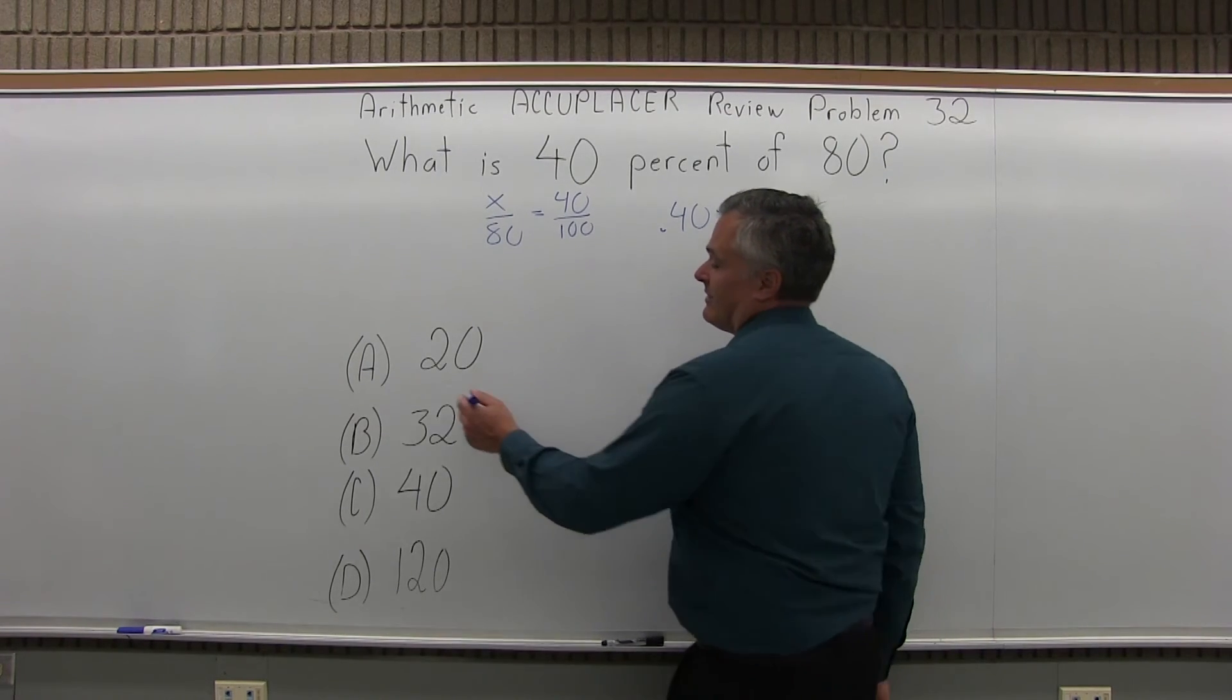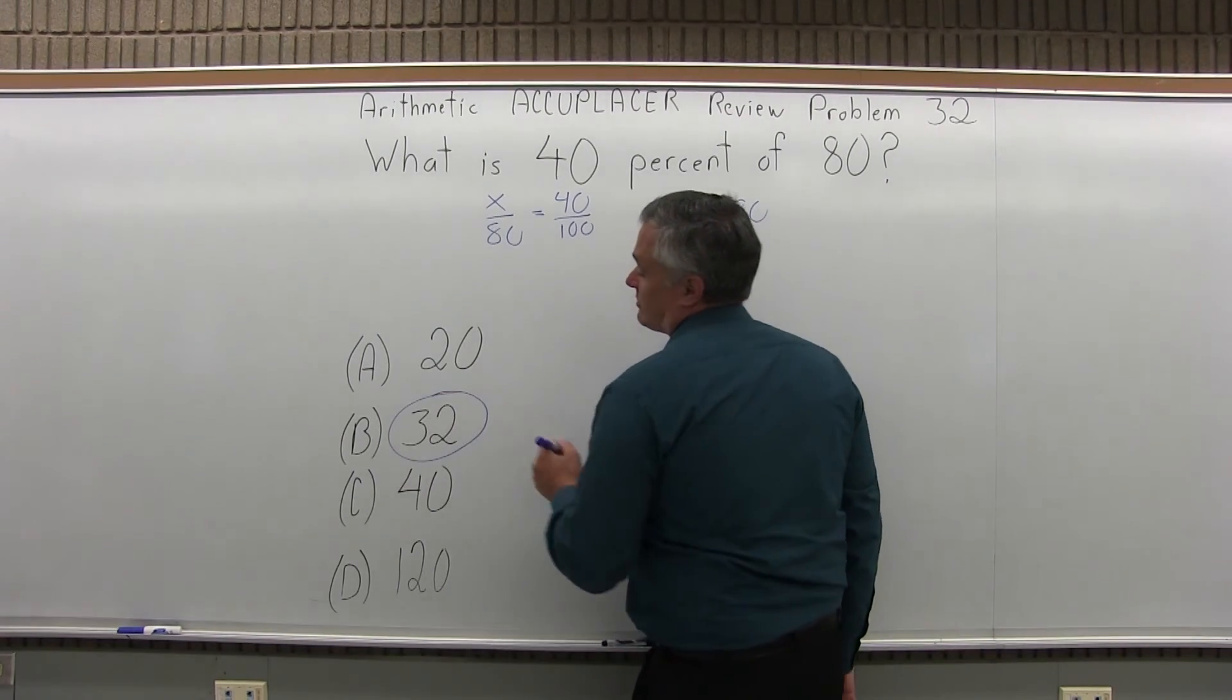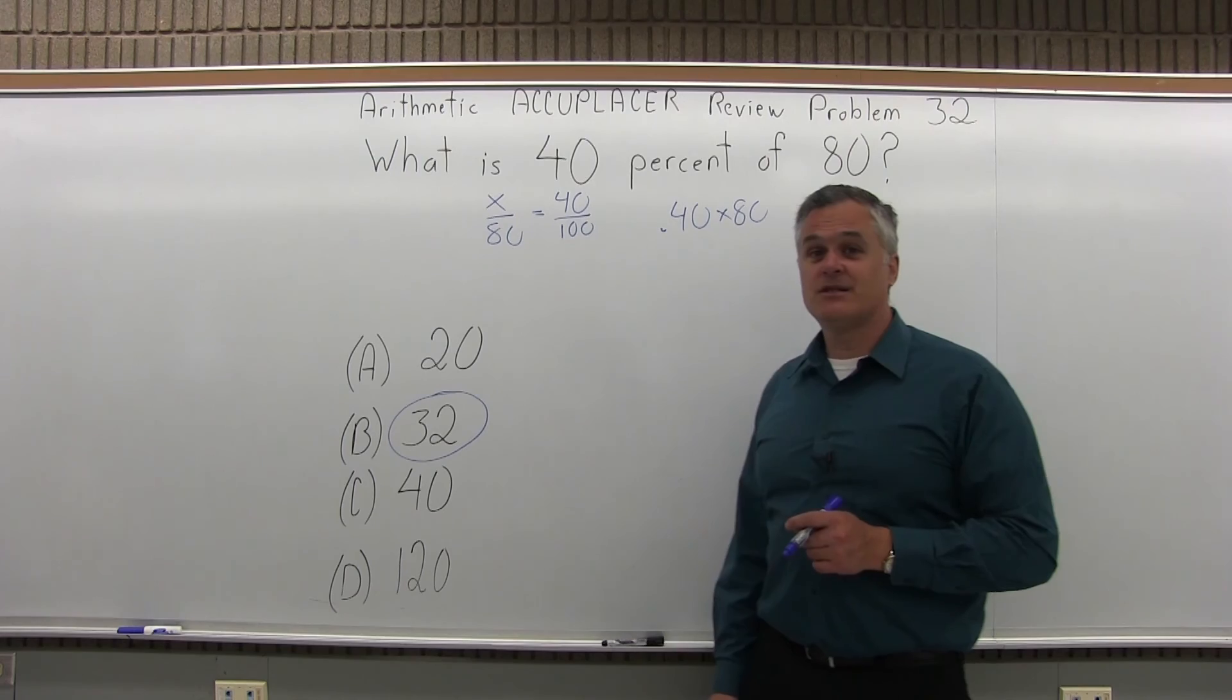So four of them, 4 times 8, would be 32. And it's one of the options. It's B, and that is the answer.